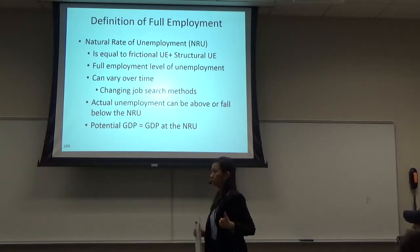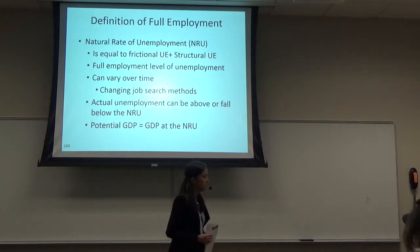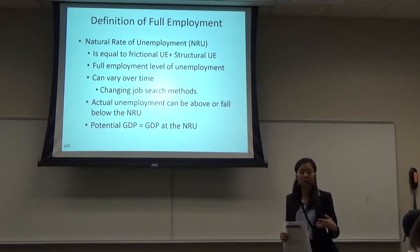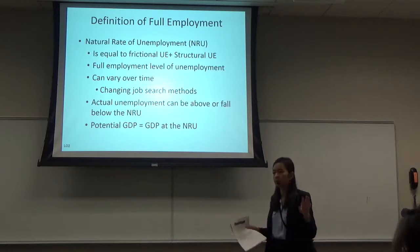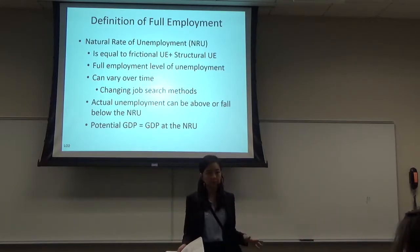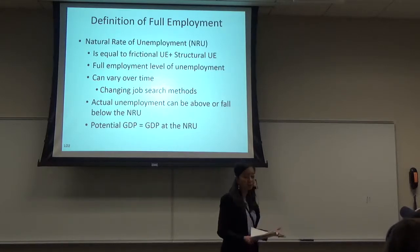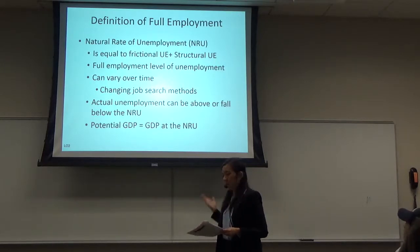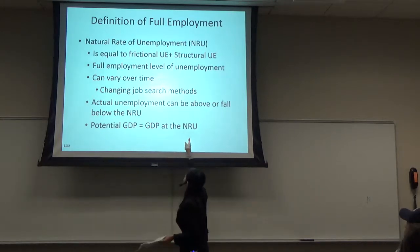So the sum of structural and frictional unemployment is the natural rate of unemployment. If your economy operates at the natural rate of unemployment, that means you have full employment. That means your economy has reached its potential — and we call that GDP 'potential GDP.' Potential GDP is GDP at the natural rate of unemployment.